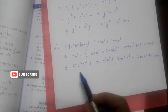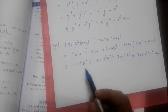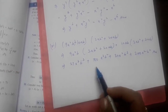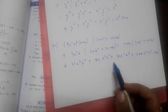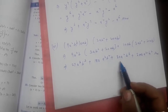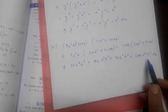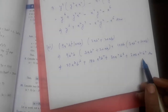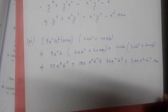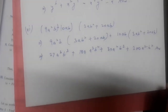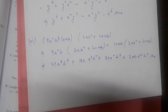Nothing is to be added or subtracted, so our answer for the sixth part of question number 3 is: 27a³b³ + 180a³b² + 30a²b³ + 200a²b². I hope all the parts of question number 3 are clear.